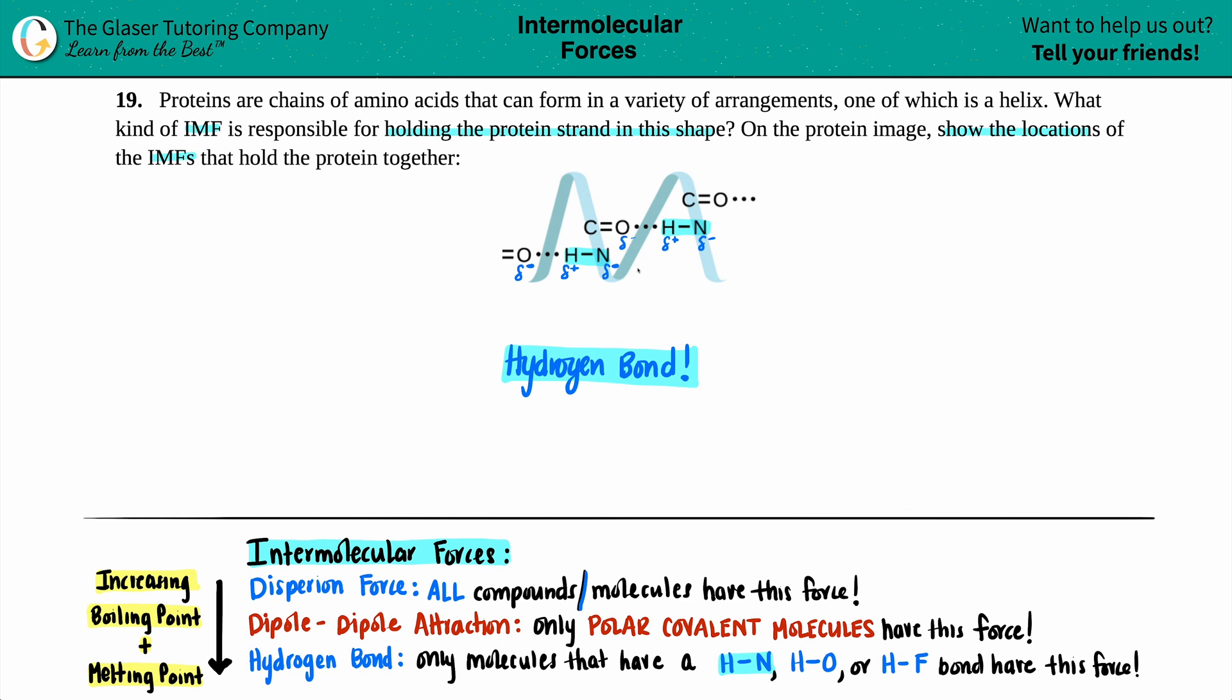And now it says on the protein image, just show the locations of this intermolecular force. So the locations are the dotted lines. So here is your hydrogen bond. I'll just say HB between the hydrogen and the oxygen. And then here is a hydrogen bond between a hydrogen and an oxygen.